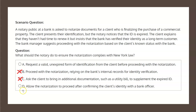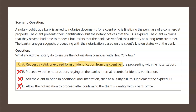And finally, choice D states: allow the notarization to proceed after confirming the client's identity with a bank officer. This is incorrect. The notary public cannot confirm the client's identity with a bank officer — the notary public can only do so via the methods allowed by the law. Therefore, choice D is not the correct solution either, which indeed leaves choice A — request a valid, unexpired form of identification from the client before proceeding with the notarization — as the correct solution.